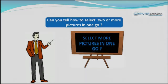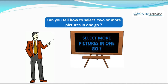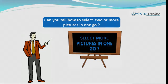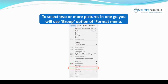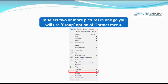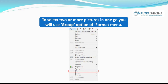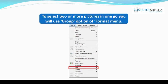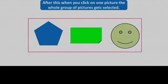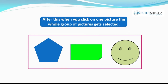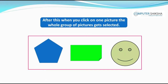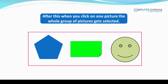Can you tell how you select two or more pictures in one go? To select two or more pictures in one go, you will go to the format menu, get to the group option, and make these pictures into a group. After this, when you click on one picture, the whole group of pictures gets selected.